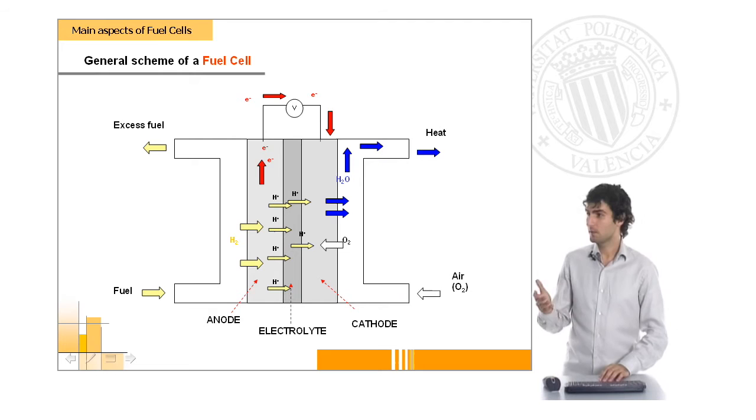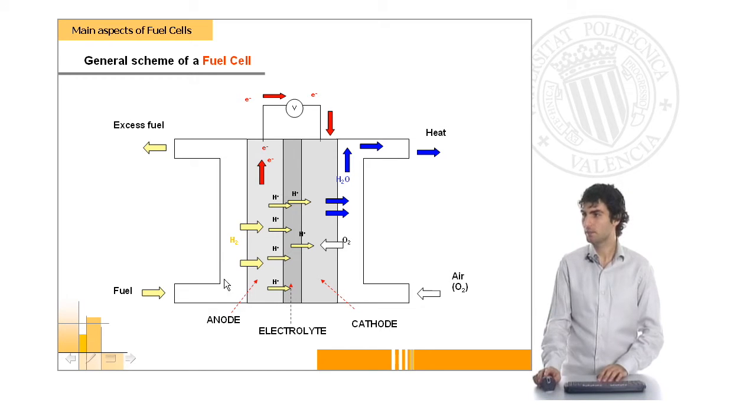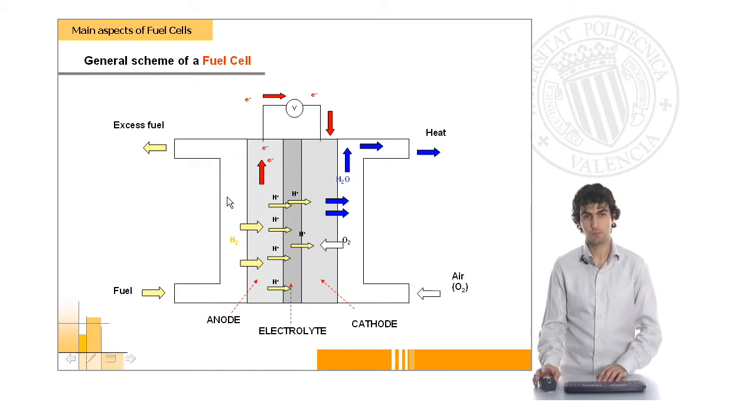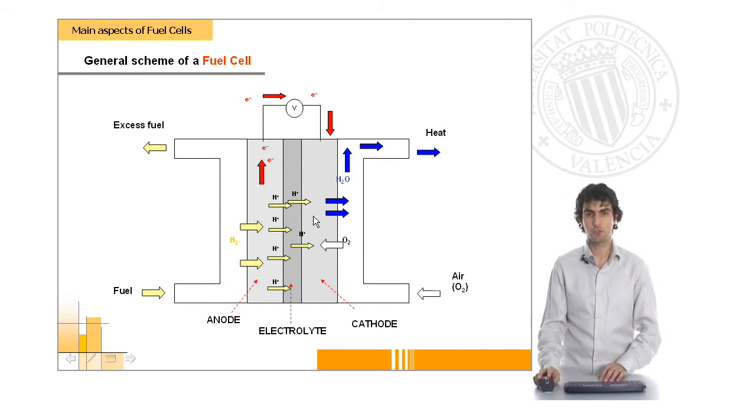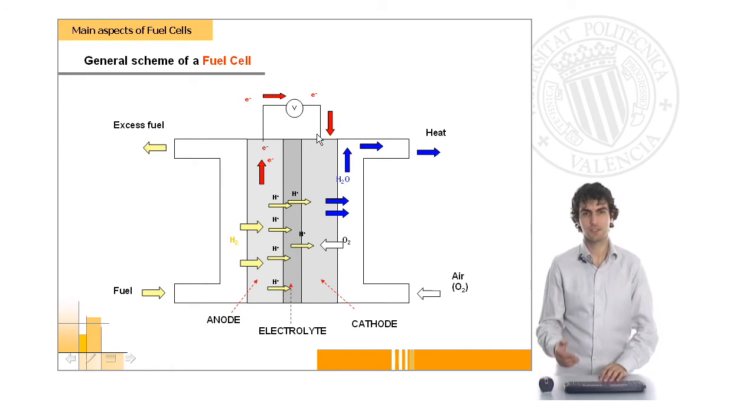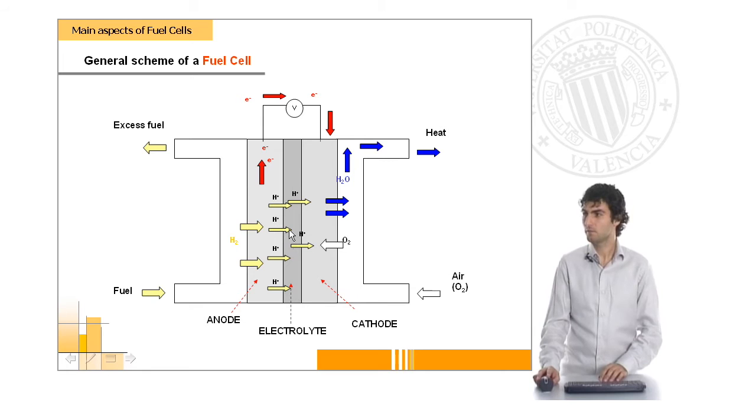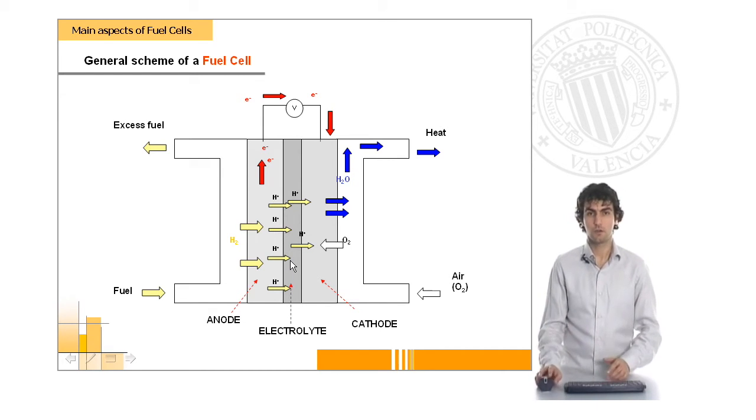This could be the main scheme of a fuel cell. As you can see, we can find an anodic part here, where the oxidation is going to take place. And then, in the cathode, the oxygen will come here and will accept the electrons of this reaction, which will flow through an external circuit. In the middle, you can find an electrolyte, which will be separating both parts of the fuel cell.